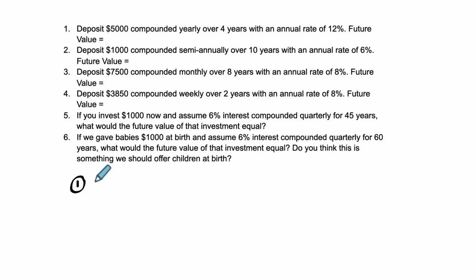Number one says we deposit $5,000. So take $5,000, that's our present value, compound it yearly for four years with an annual rate of 12%. So we're going to multiply it by 1 plus 12%. That happens every year for four years, and that will give us the future value of our money.